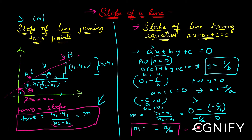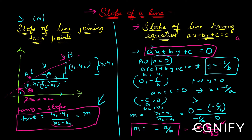You can remember it this way: put a minus sign, then take the coefficient of x divided by the coefficient of y — that's how you find the slope of a straight line ax + by + c = 0. You must have seen this equation in tenth grade. So: slope = −(coefficient of x)/(coefficient of y) = −a/b. With this, we complete the concept of slope of a line and move on to the angle between two lines.